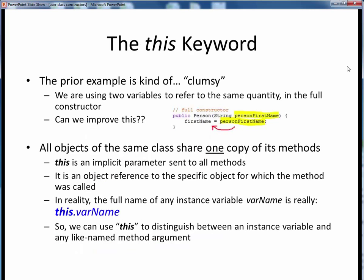I don't know if you caught it or not, but there's one little thing about the prior example that just sort of bugs me. In the full constructor we just wrote, you can see that we're using two different variable names to refer to the same data quantity. Our input to the full constructor is a string called PersonFirstName, but all we're doing is simply transferring its value to the instance variable FirstName, two different names referring to the same single data quantity. I just find that kind of clumsy. Can we improve upon this somehow? Well, this is Java, so of course we can.